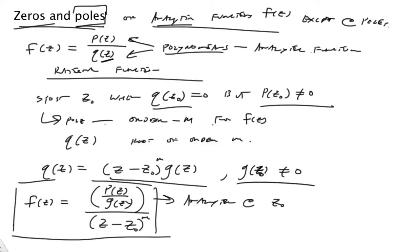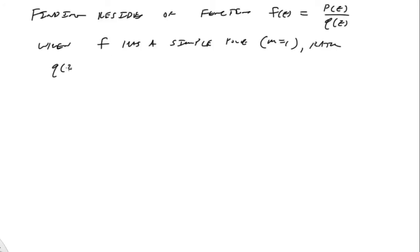So let's look at finding residues of functions f of z equals p of z over q of z, when f has a simple pole, that is m equals 1, or rather q of z can be factored as z minus z-naught times g of z. So there's a nice way to find residues of this. All right, so again, typically the residue question involves some contour integral.